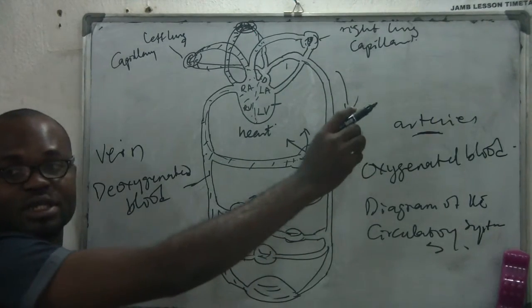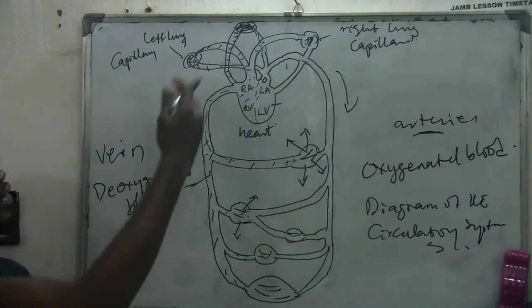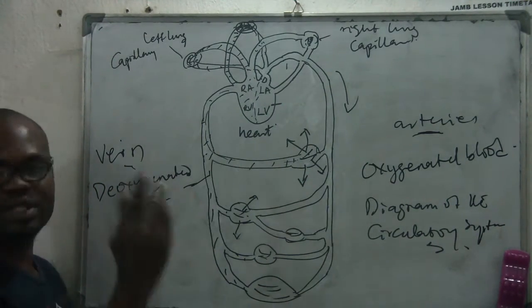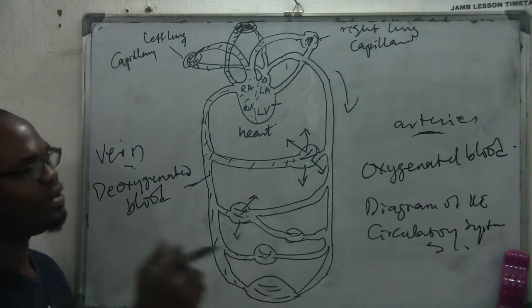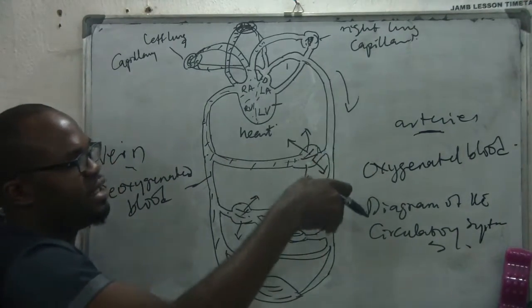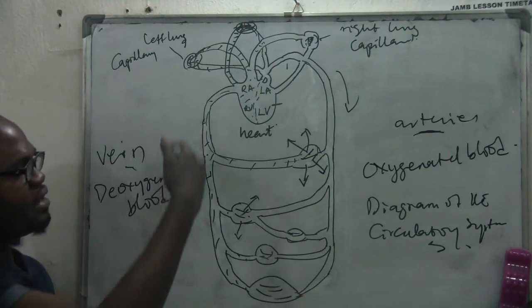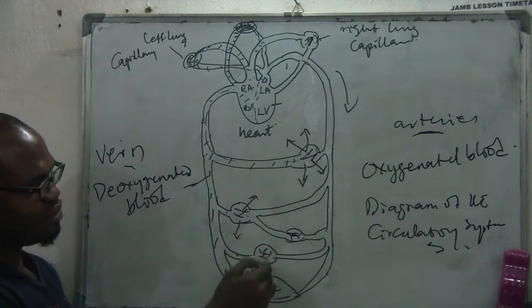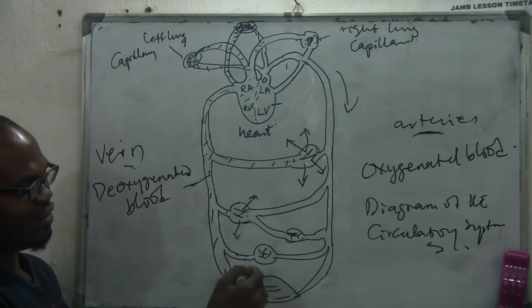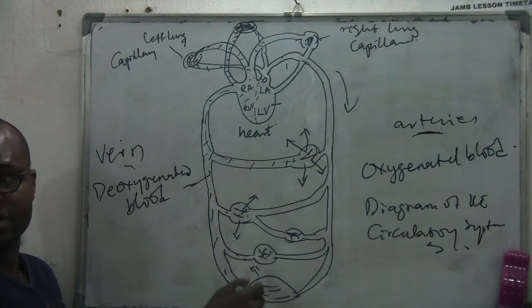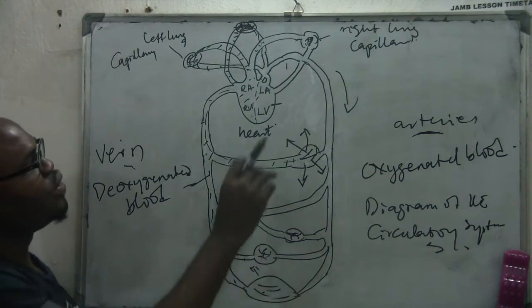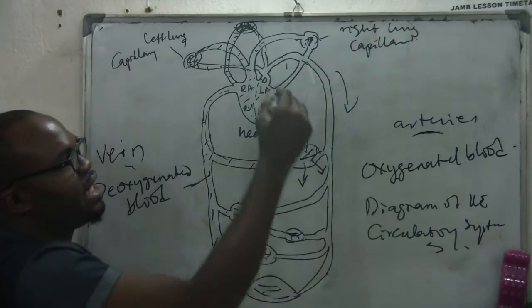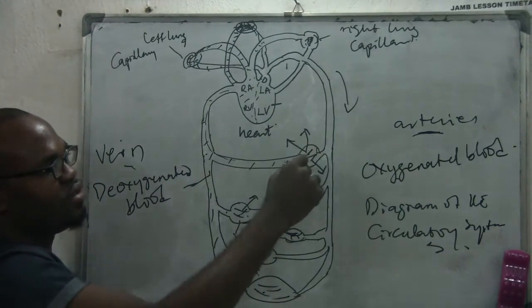This oxygenated blood is carried by the arteries. We have three types of blood vessels: the arteries on this side, the veins on this side, and the capillaries. The capillary is where there is transfer of substances between the blood and the body tissues.